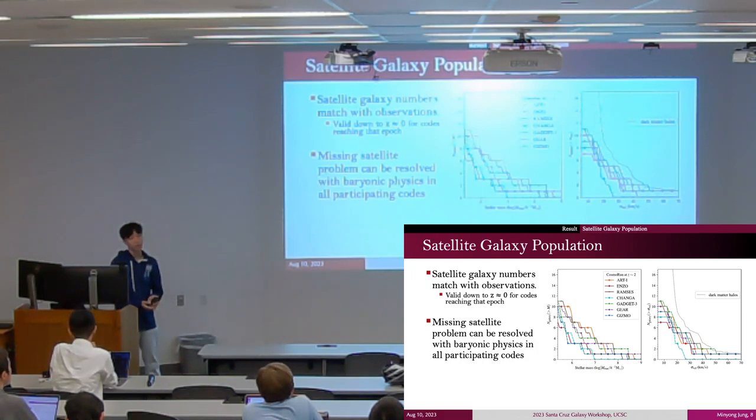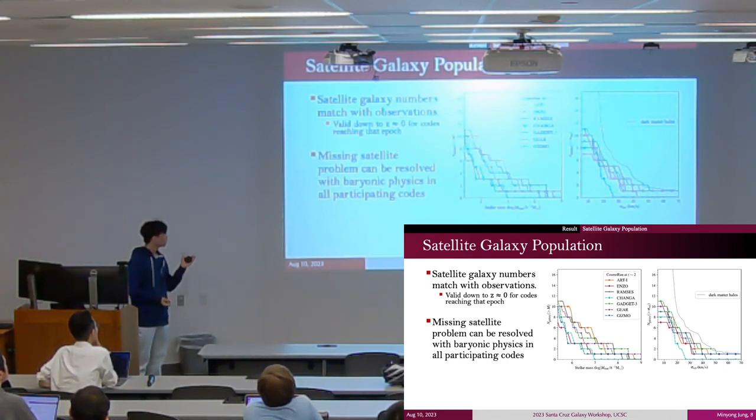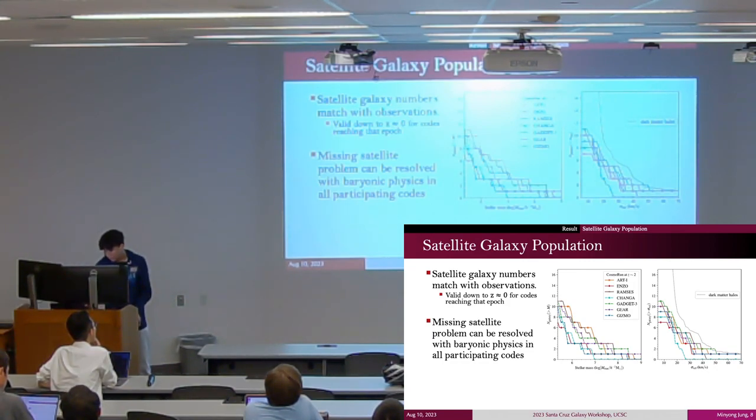In this plot, we assign stellar particles to the satellite halos and see the intercode agreement in the satellite galaxies. The left plot shows the cumulative number of satellite galaxies by their stellar mass, and the right panel shows the satellite galaxies by their dynamical mass.